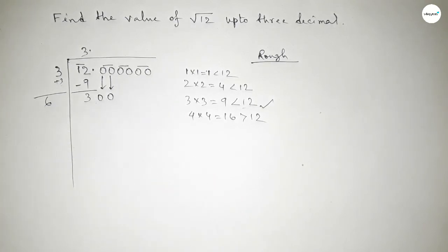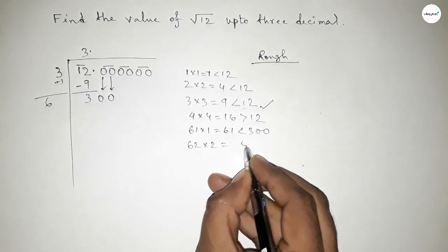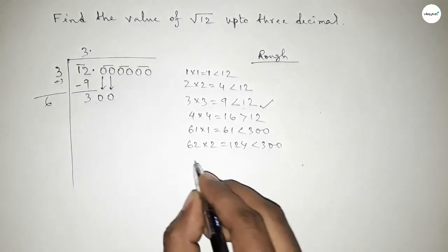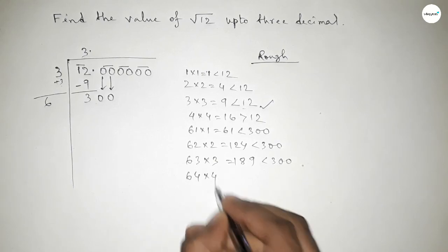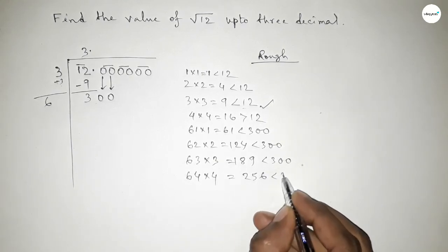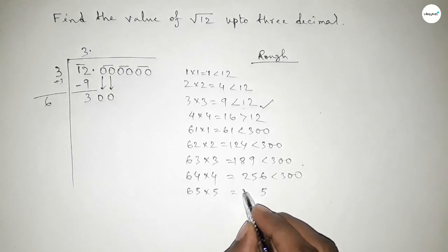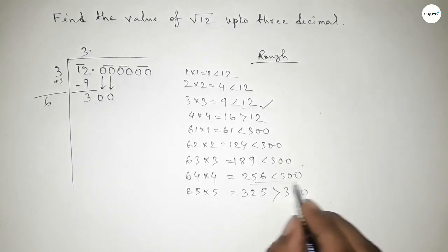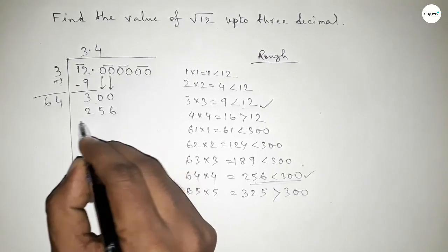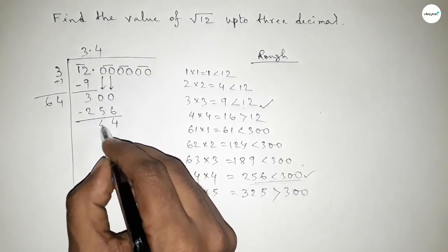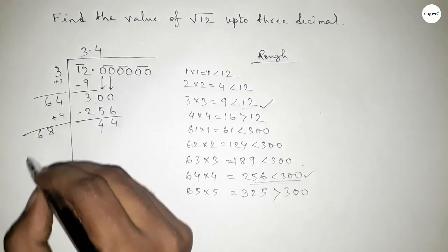By adding 3, this becomes 6. The point will be here and the first pair of zeros will be here. Now what should we put beside 16? Multiplying: putting 1 is less than 300, putting 2 is less than 300, putting 3 is less than 300, putting 4 multiplied by 4 is less than 300, but putting 5 is greater than 300. So we take 4. So 64 times 4 is 256. Now subtracting: this is 44.